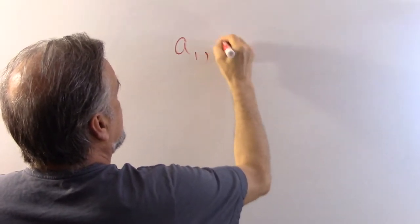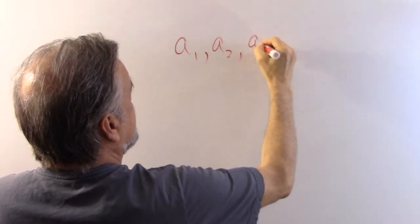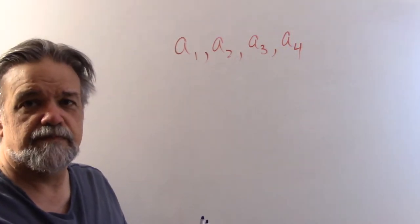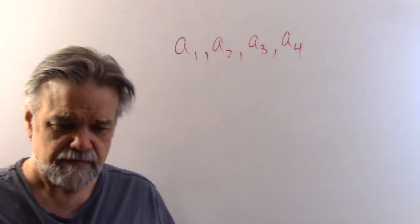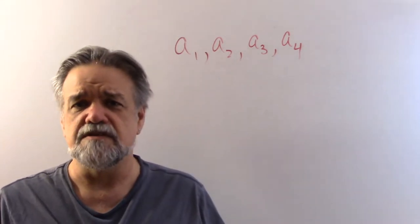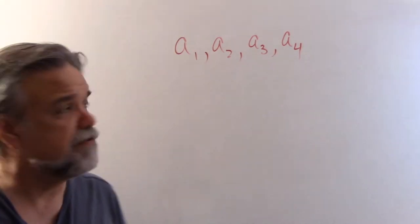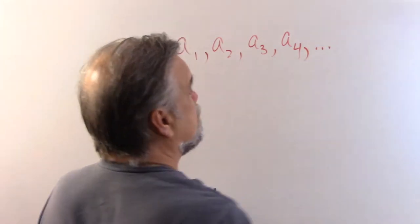So there's the first one, the second one, the third one. And when I say the first one, that's called a term — the first term, the second term, the third term, the fourth term, like that. Generally, we write it like a sub one, a sub two, a sub three, a sub four, where we use a subscript. Sequences can be finite — that is to say, they have a last term — or they can be infinite, where you just say dot dot dot forever.